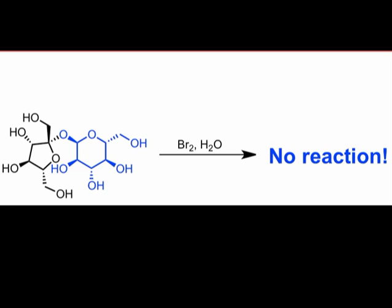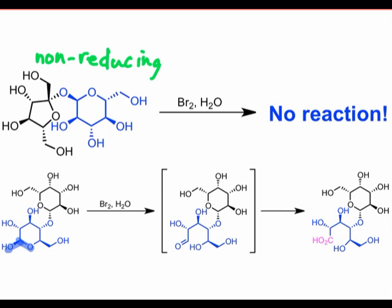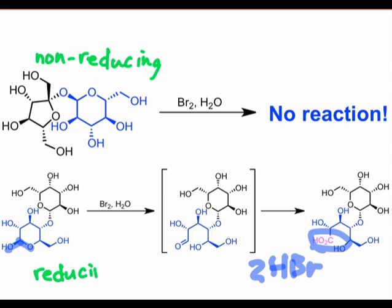Because this 1-1 connected sugar does not have the ability to reduce aqueous bromine to two HBr molecules, we call it non-reducing. Sugars containing a hemiacetal group are called reducing because as they are oxidized to carboxylic acids, they reduce Br2 and H2O to two molecules of HBr.